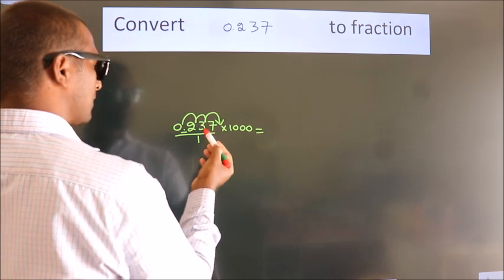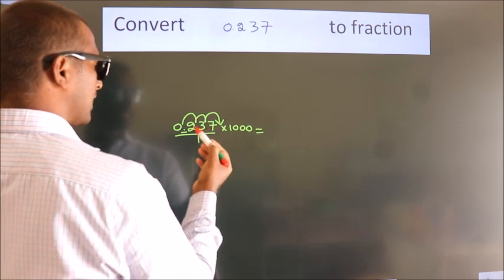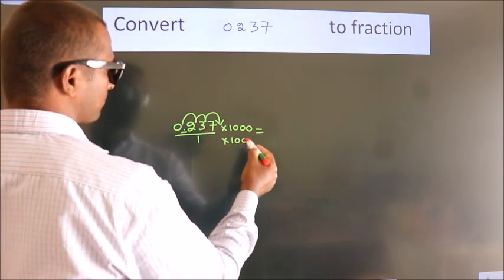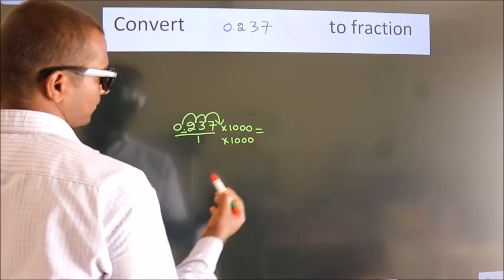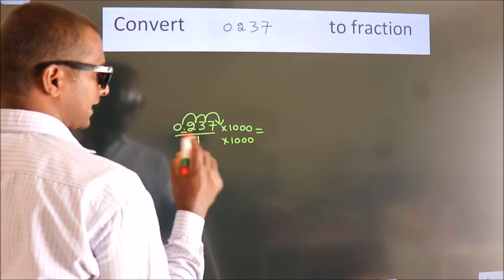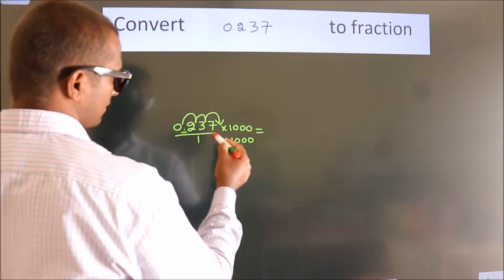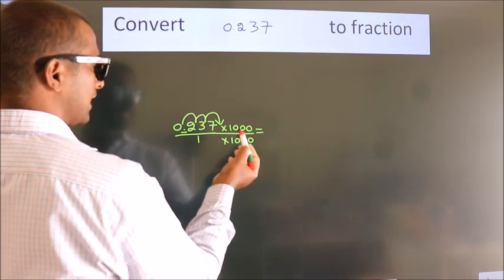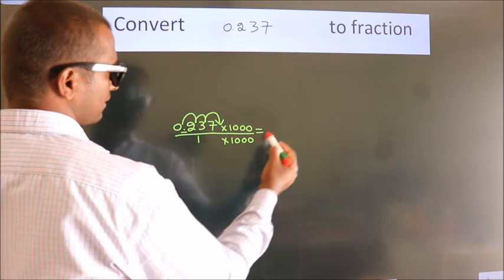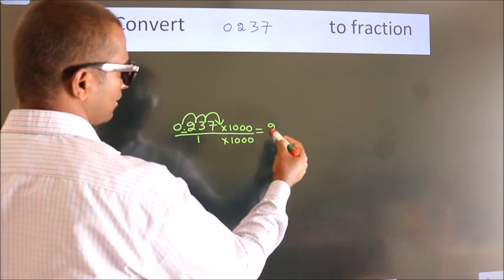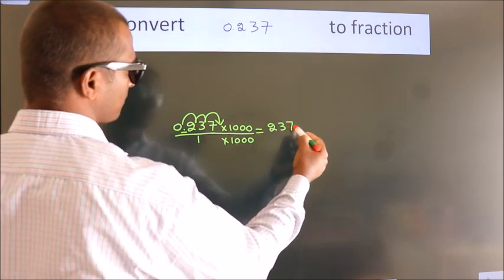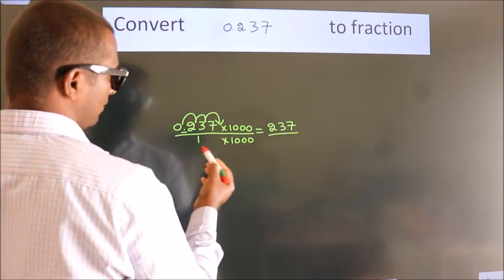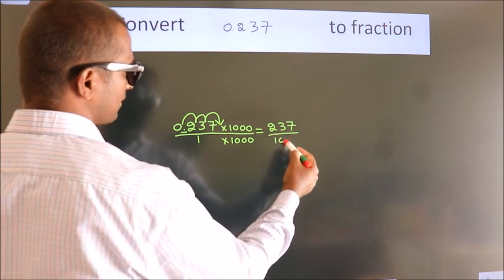Whatever you are multiplying in the numerator, in the denominator also do the same. So: 0.237 multiplied by 1000 gives 237, and 1 multiplied by 1000 gives 1000.